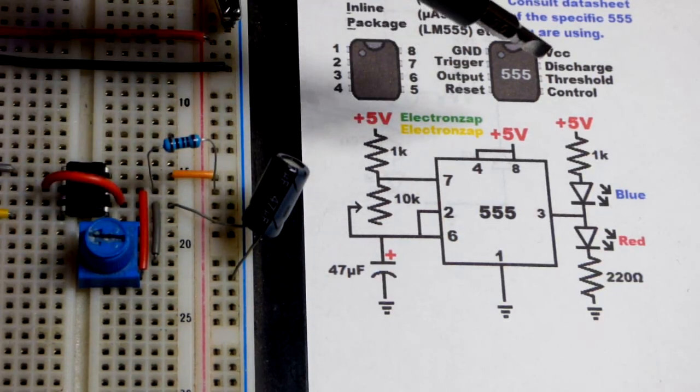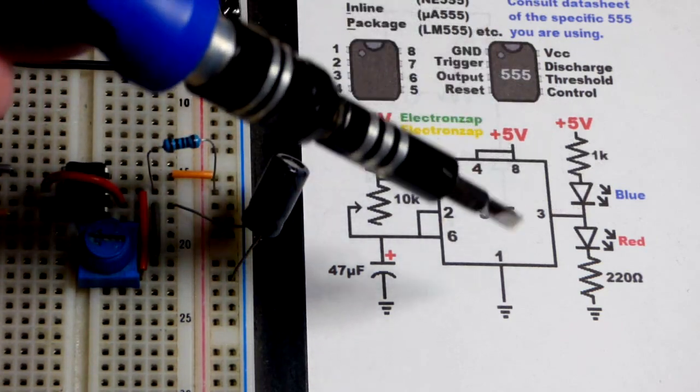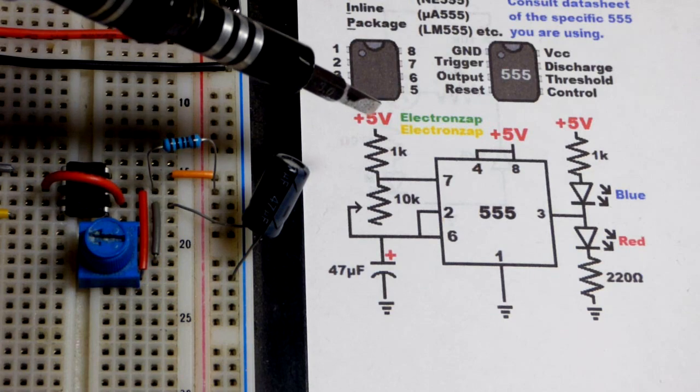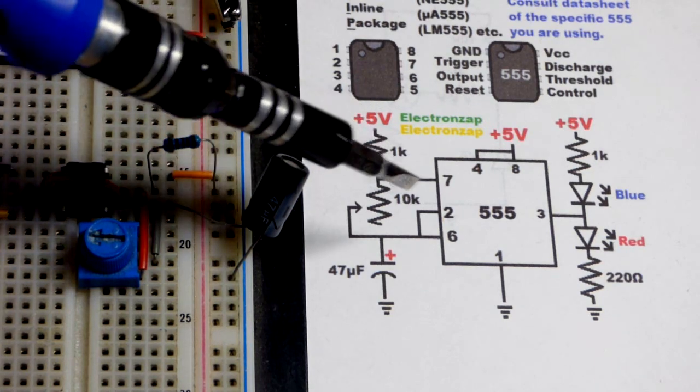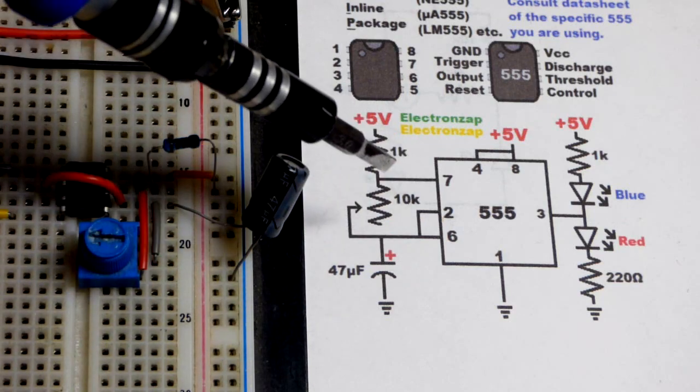So now pin 7 here, the discharge pin, connects to ground when the output is low and the blue LED is lit up. So we got the positive supply there. We definitely need some resistance there. After we get through that resistance while the capacitor is charging,